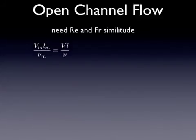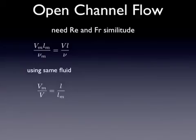Here's one example for this. For open channel flow, for example, we really need Reynolds number and Froude number similitude. Those are two very important properties. If we look at the Reynolds number, we want similitude in the Reynolds number. And if we're using the same fluid, what this results in is that the velocity scale is inversely related to the length scale.